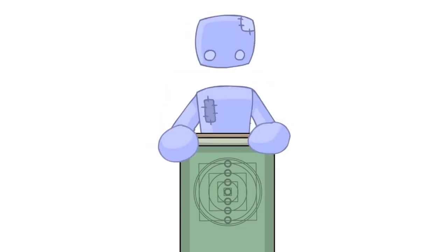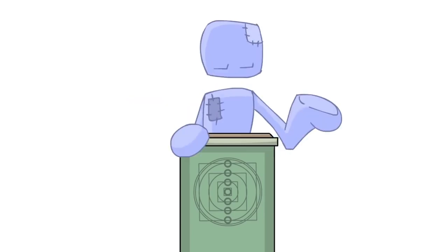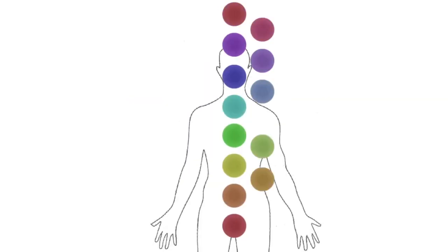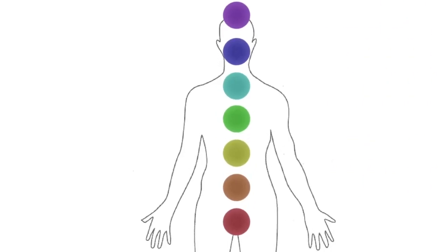Right, so chakras are energy points that run vertically from the top of your head down your spine. Depending on how you look at it, there are 7, 8, or 13 primary chakras, as well as over hundreds of smaller, less important ones that are just scattered around the body. I'm going to cover the 8 and 13 later on, so for now let's just stick with the basic 7.